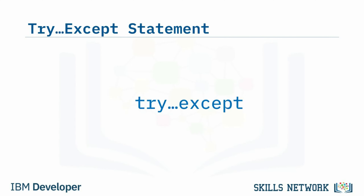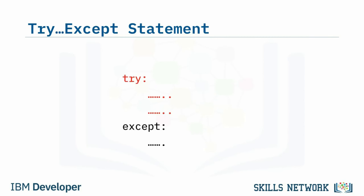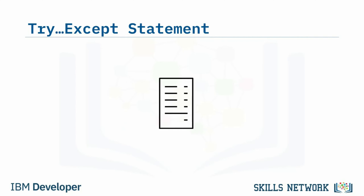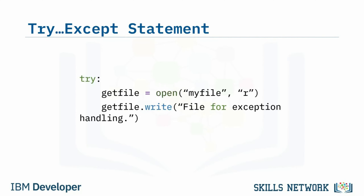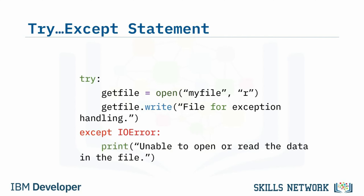By encasing this code in an exception handler, the program knew how to deal with this type of error and was able to output the error message and continue. We will first explore the try/except statement. This type of statement will first attempt to execute the code in the try block, but if an error occurs, it will kick out and begin searching for the exception that matches the error. Once it finds the correct exception, it will execute that line of code.